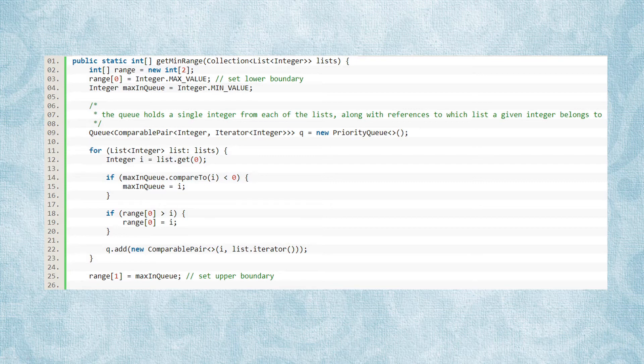Since we also need to know which list a given value belongs to, we make use of a simple container object that has two items: a value from the list and a reference to the list itself.